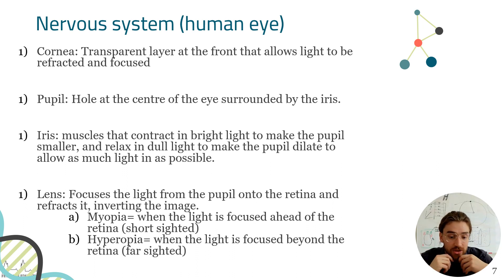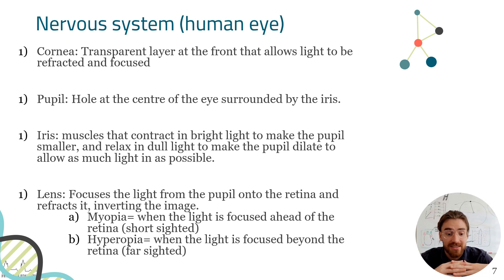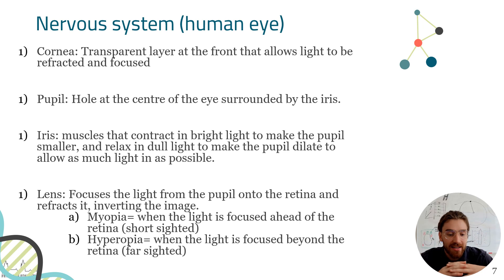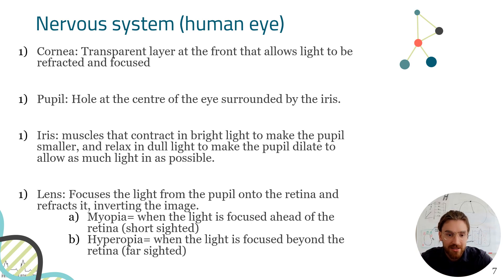When it comes to people who struggle to see, we are either short-sighted or far-sighted. Short-sightedness is myopia — this is when the light is focused ahead of the retina. Hyperopia is when the light is focused beyond the retina.